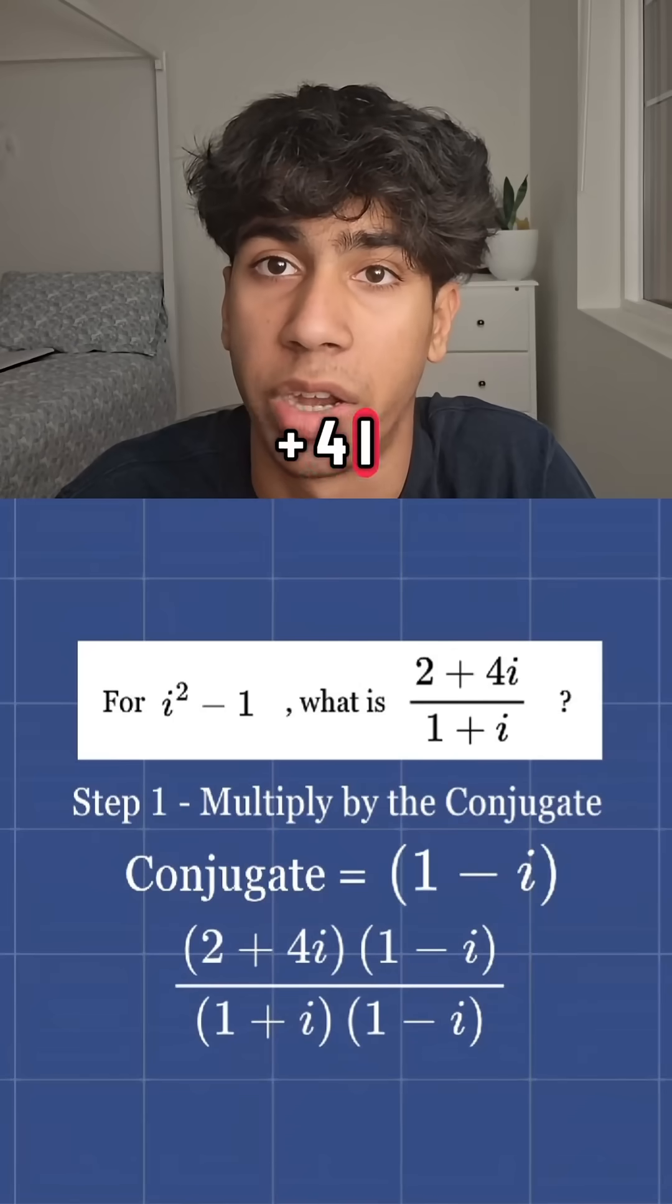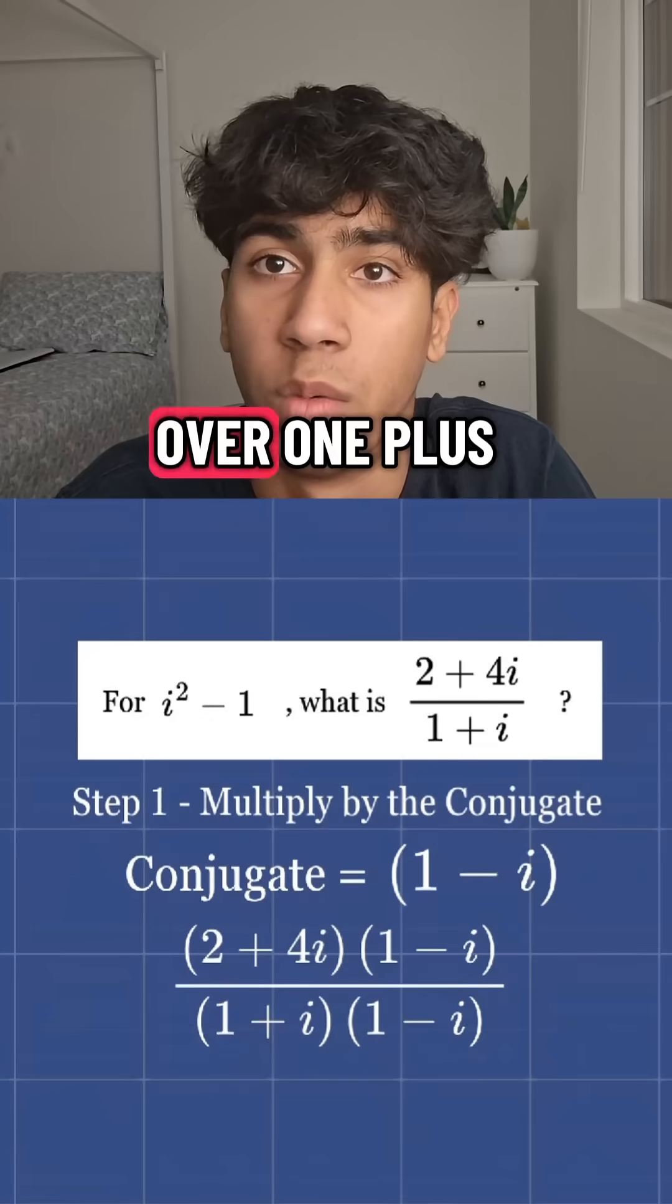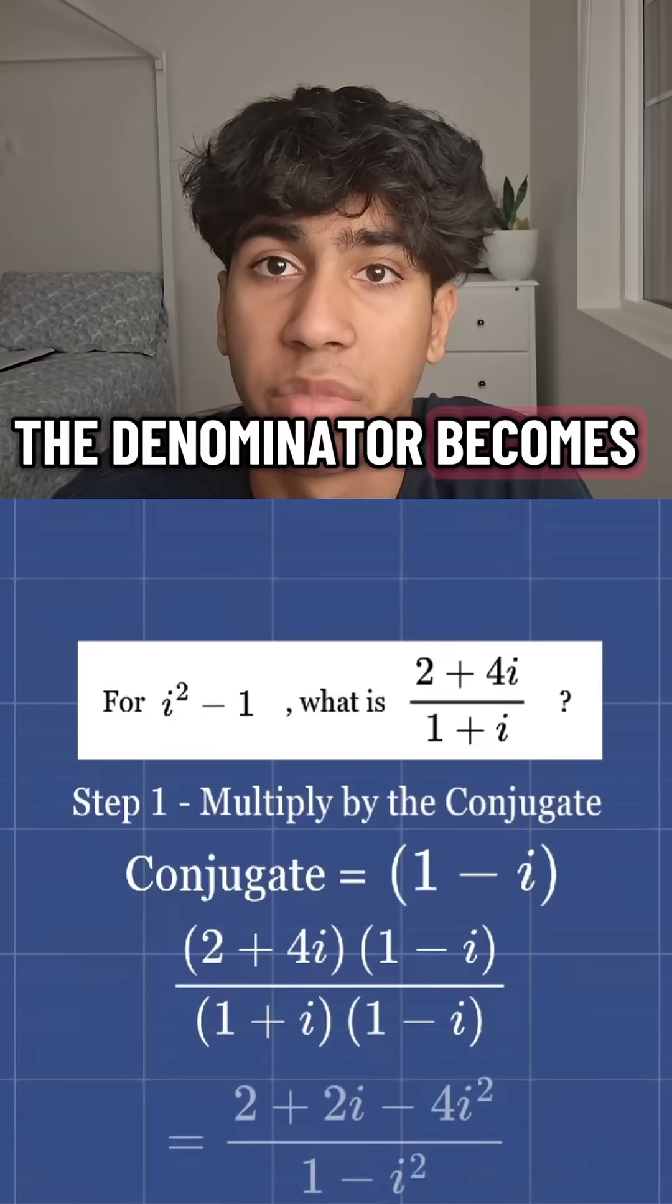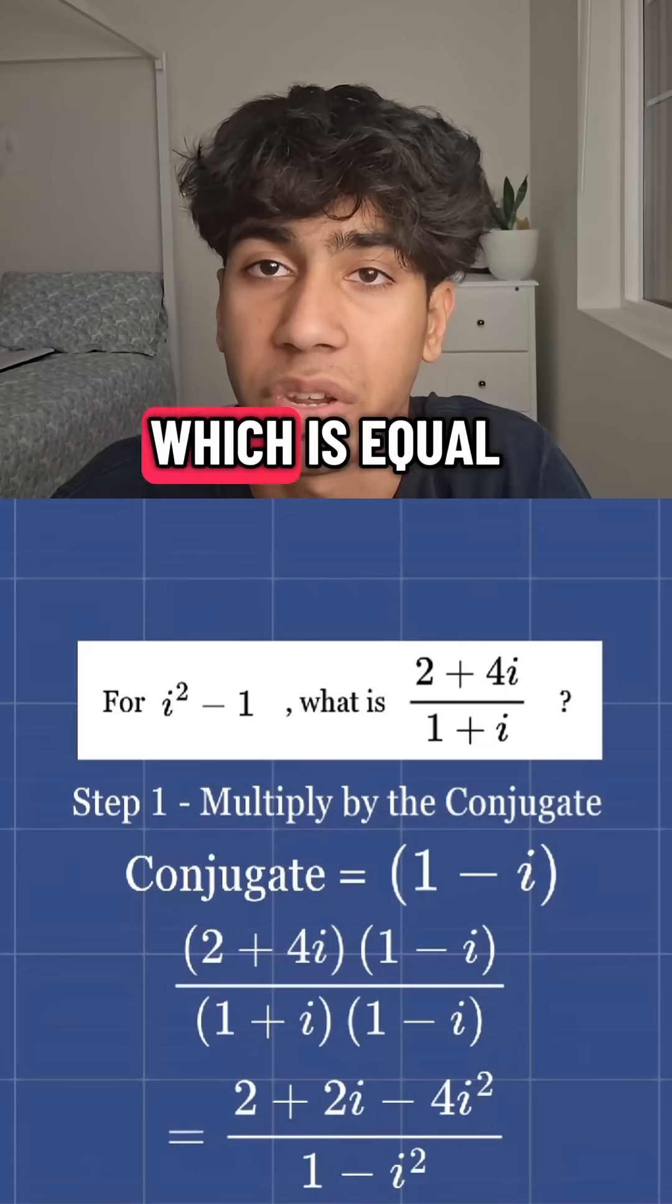So we get 2 plus 4i times 1 minus i over 1 plus i times 1 minus i. The denominator becomes 1 minus i squared, which is equal to 2.